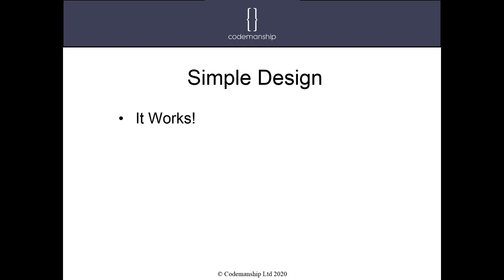Provided that it works, the next thing Kent asks us to think about is whether the code is easy to understand — or as he puts it, does it clearly communicate its intent? Can we understand what the code is doing just by reading it? We don't rely on comments or documentation as much as possible; we try to get the code to describe itself. For example, if you see a block of code and you're not sure what it does, you could extract that block into its own method or function and use the name to tell the story of what the code does.